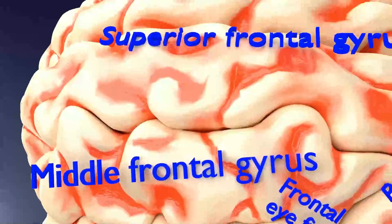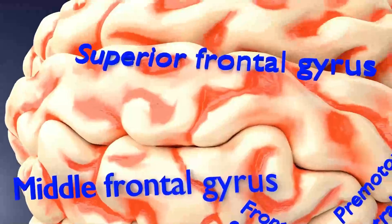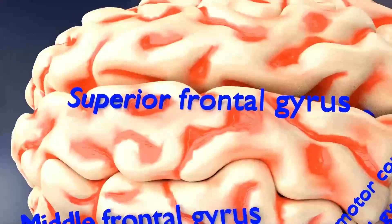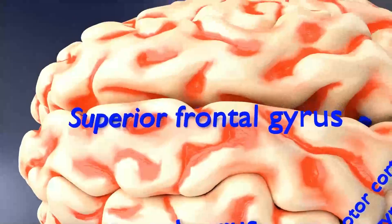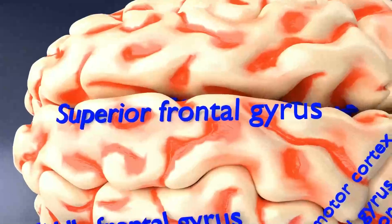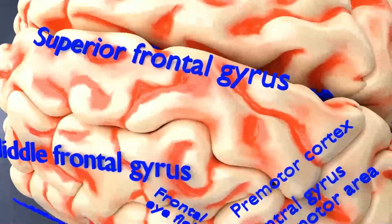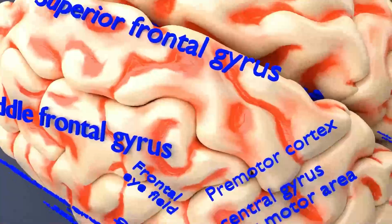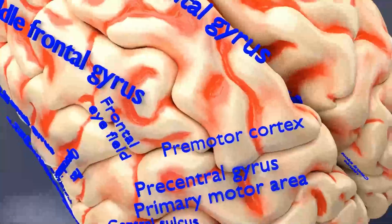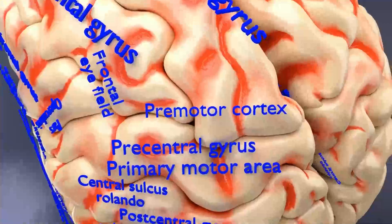The dominant left superior frontal gyrus is a component of working memory and spatial processing. The non-dominant right superior frontal gyrus is involved in impulse control, modulating inhibitory control and motor urgency. To understand dominant and non-dominant hemispheres of the brain, you can refer to part one of this series.